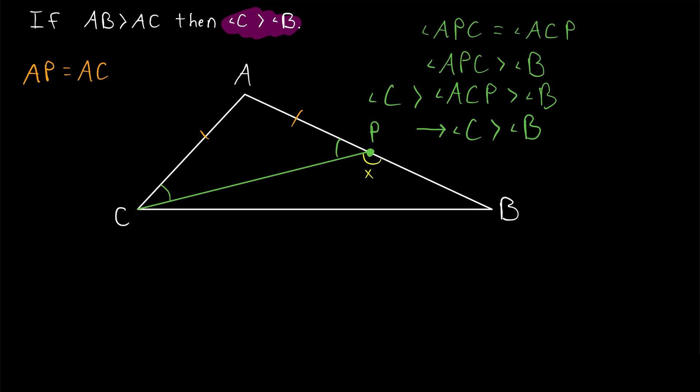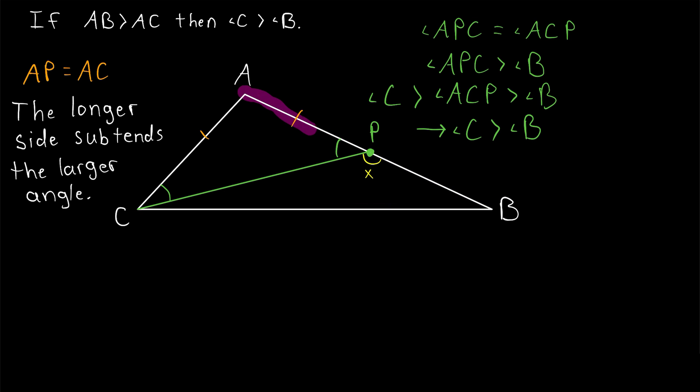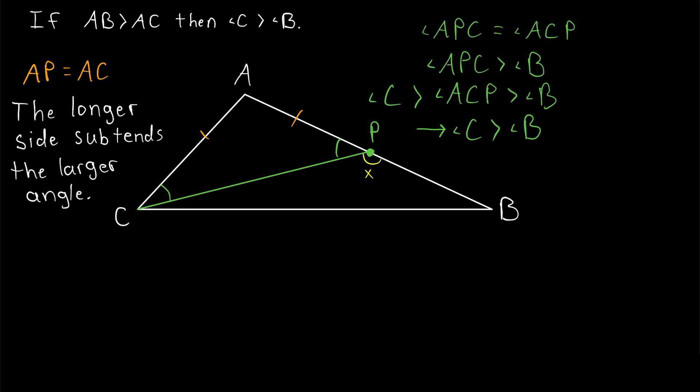And that's what we wanted to prove. So we have demonstrated that in a triangle, if one side is longer than another side, the angle opposite the longer side is greater than the angle opposite the shorter side. We can also say that the side of a triangle subtends its opposite angle. So another way to state this result is that the longer side subtends the larger angle.